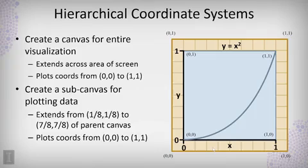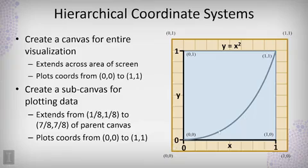In two-dimensional computer graphics we can set up hierarchical coordinate systems, meaning you have a canvas within a canvas. We have a yellow canvas that is the coordinate system for the entire visualization, and then an inner canvas that is a coordinate system just for the plotted data — in this case the parabola. The outer coordinate system goes from (0, 0) to (1, 1).